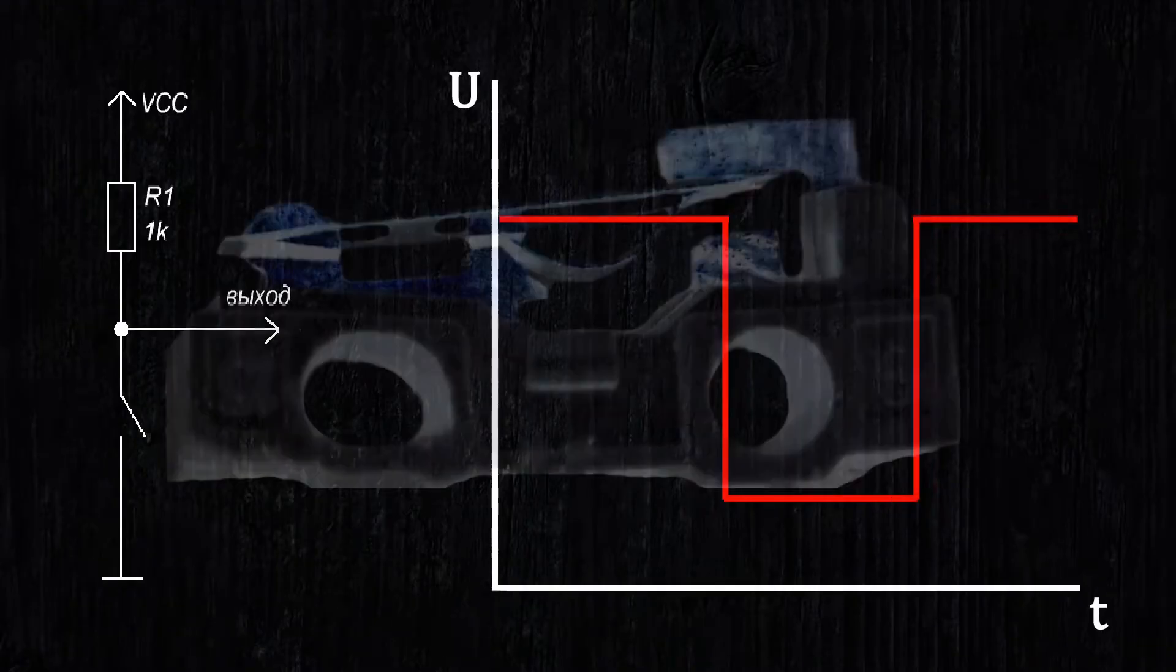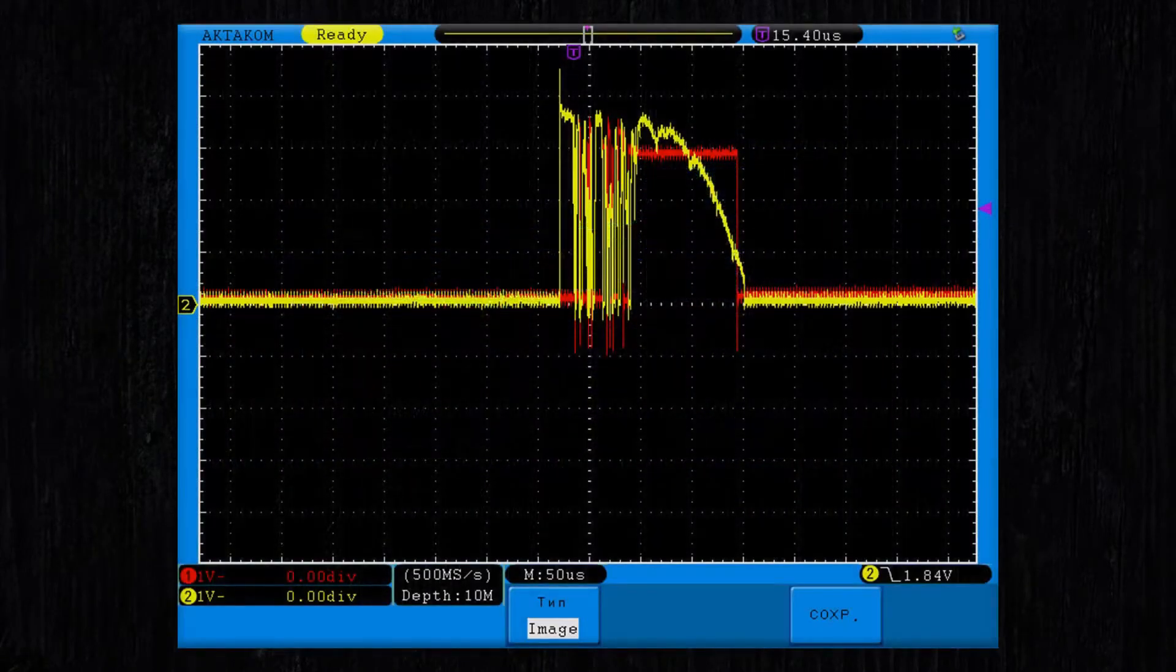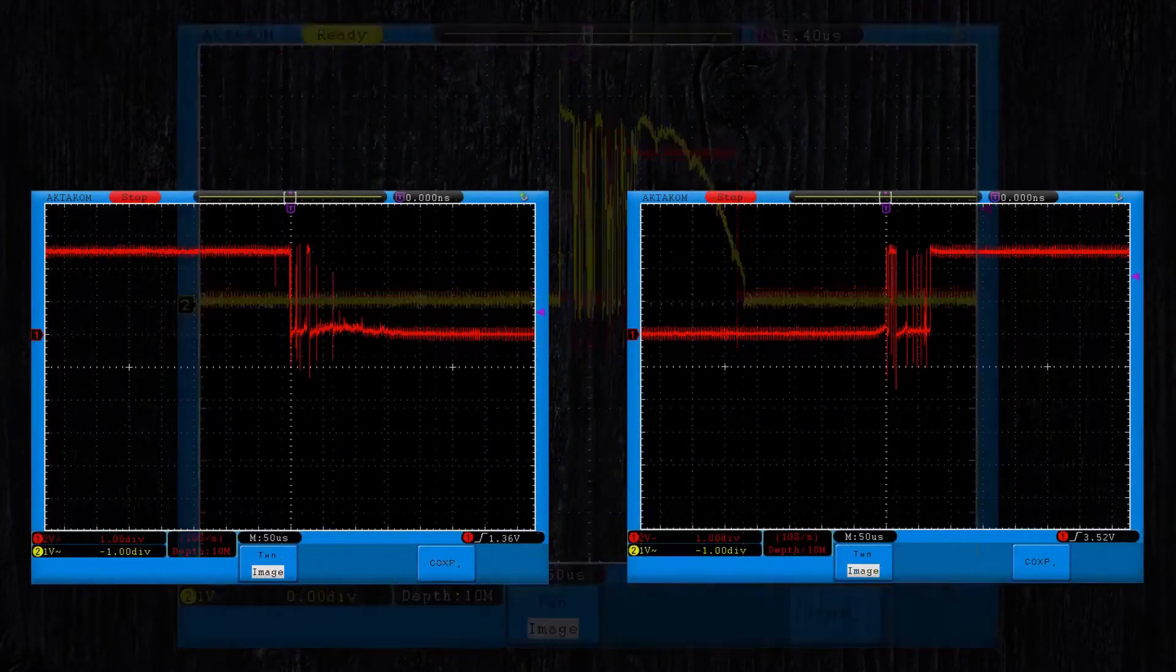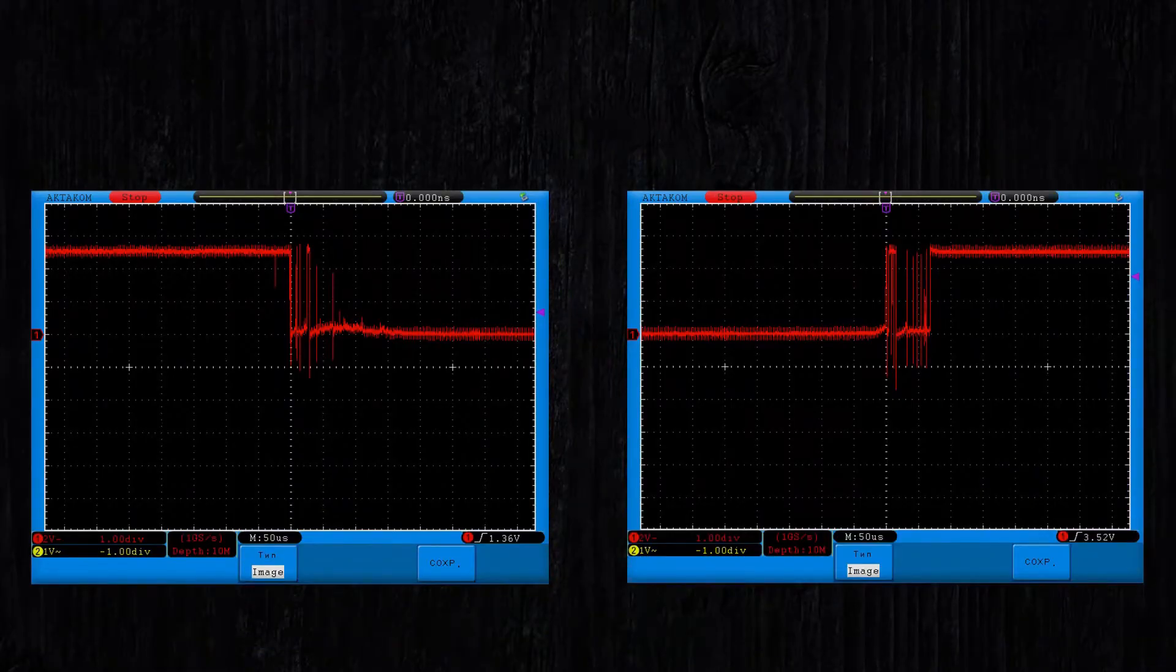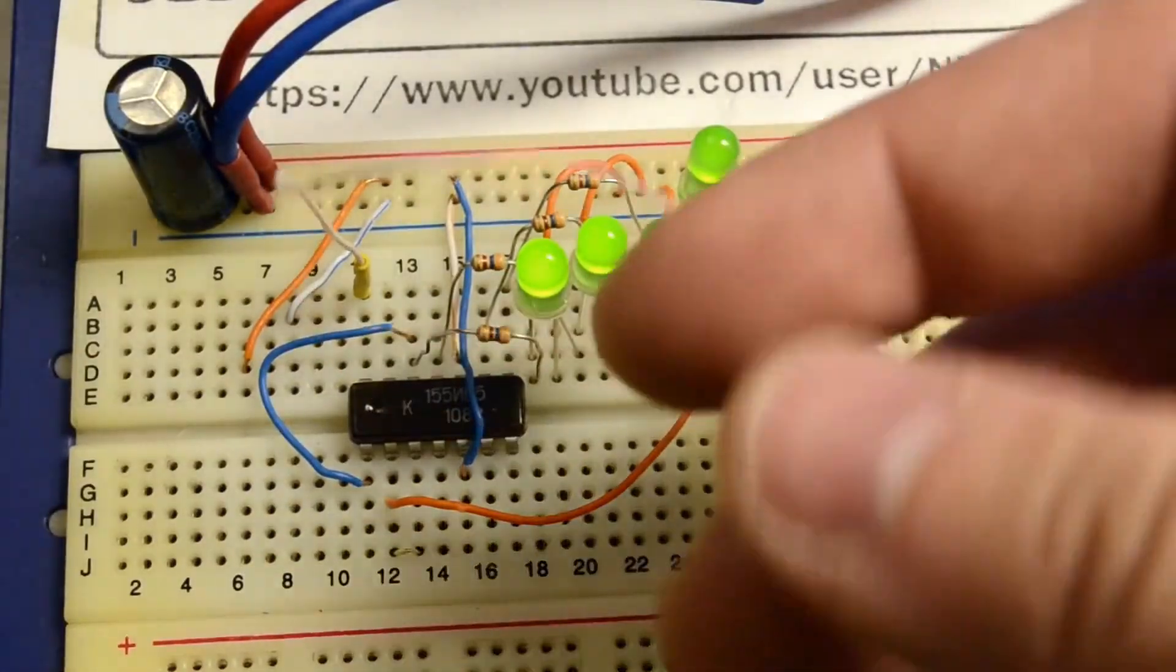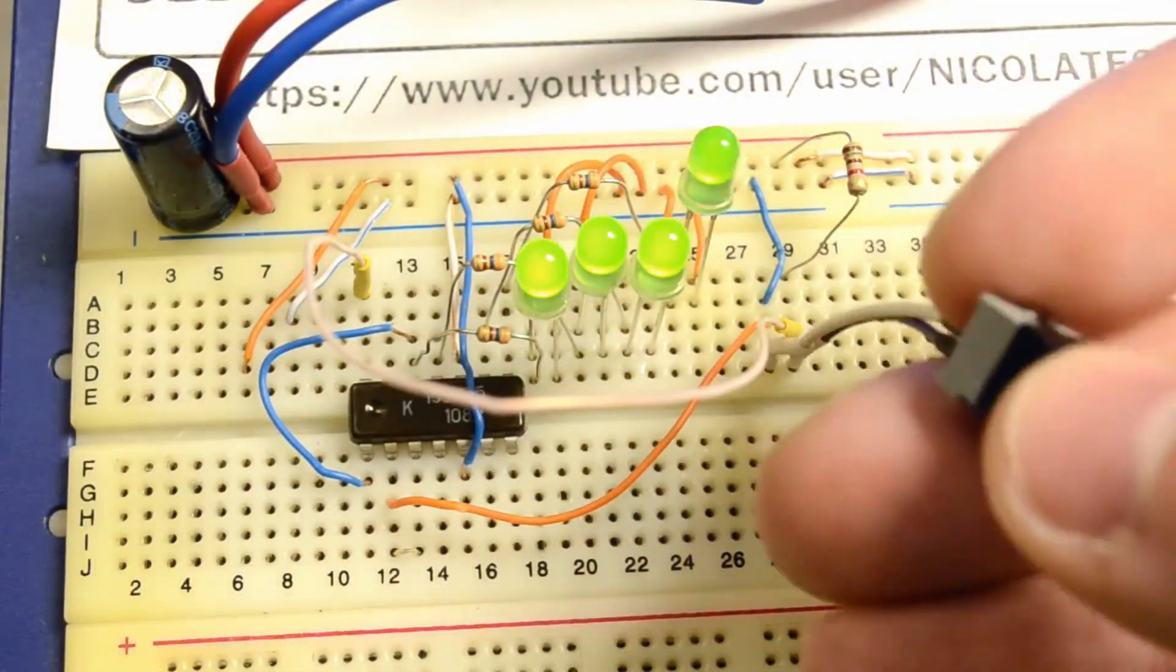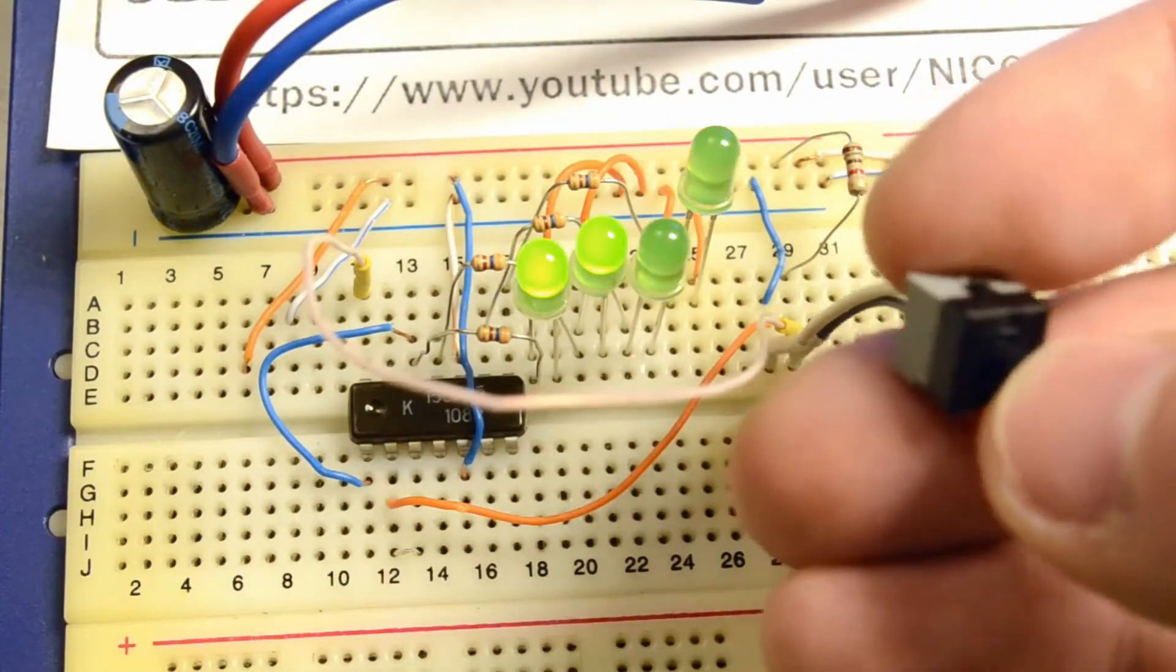In reality, the button, which consists of two mechanical surfaces, forms multiple switches upon contact, due to the imperfections of the contact surfaces and the force of elasticity. This will lead to the following signal at the output. Due to such noise, problems arise with processing button presses and encoder rotations, because the system sees each of these pulses as a separate press.